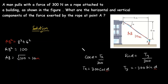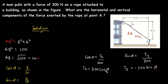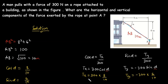Now that we have AB = 10, we can find cos α and sin α. cos α = adjacent / hypotenuse = 8/10, and sin α = opposite / hypotenuse = 6/10. Substituting: TX = 300 × (8/10) and TY = −300 × (6/10).